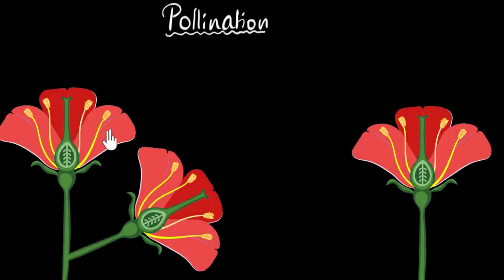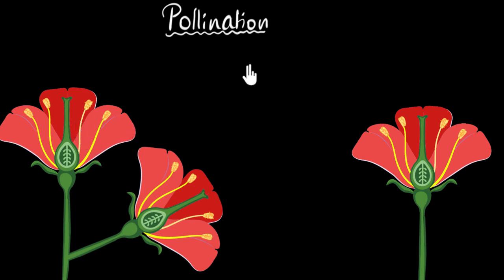Flowers use their beautiful petals and fragrance to attract insects. Why do they do that? Because the insects help them in pollination. So in this video, we're going to see what pollination is, what are the different types, and how exactly the insects help.